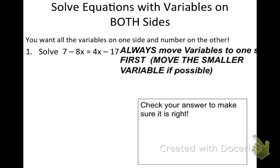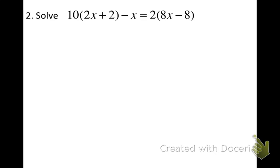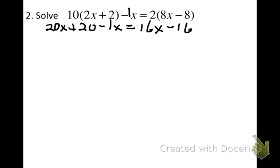Now let's look at the second practice problem. I do see a lonely variable — do you see it? That negative x has an understood coefficient of 1, so we can put that in. On the left and right sides I see some distributing to do. So 10 times 2x is 20x, 10 times positive 2 is plus 20, and then I have minus 1x equals. Then distribute 2: 2 times 8x is 16x, and 2 times negative x is negative 16. Looking at each side separately, I have 20x minus 1x, which gives me 19x. On the right side I have 16x and the constant negative 16, which I can't combine.